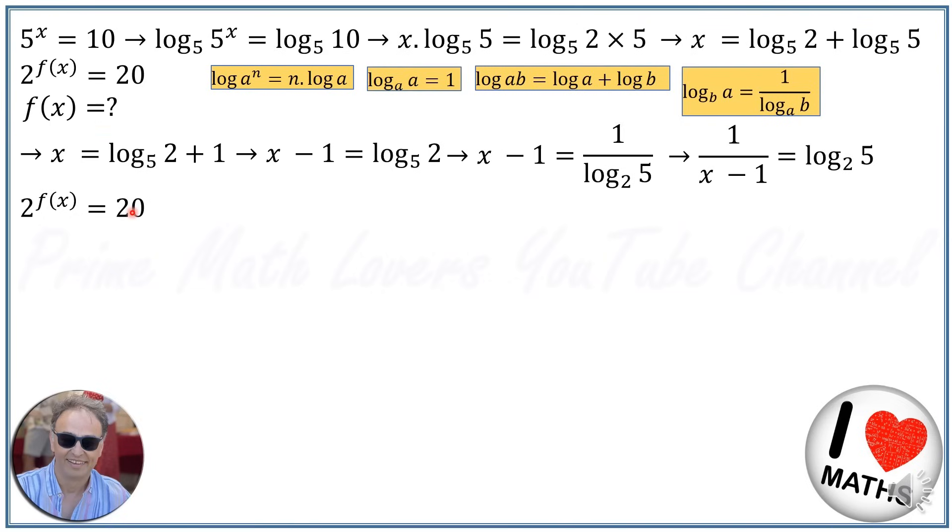We're going to do the same dance here and take the log base 2 of both sides, and we get log₂(2^f(x)) = log₂(20). Applying our trusty exponent rule again, we can bring f(x) to the front. We will have f(x)·log₂(2) = log₂(4×5).